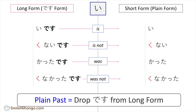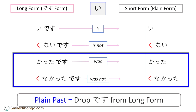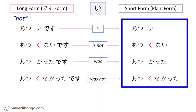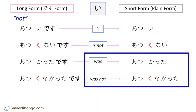The conjugation for i-adjective plain form is very simple — you simply drop です from the long form. The main focus in this lesson is the past plain form: was and was not. In the case of 熱い (hot), it conjugates like this: 熱い、熱くない、熱かった、熱くなかった. These last two are the plain past — was hot and was not hot.